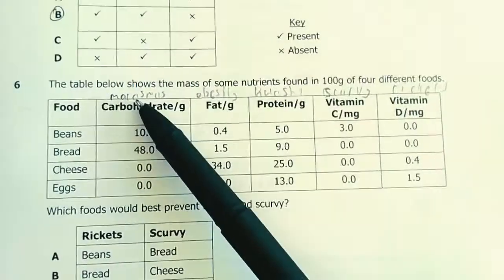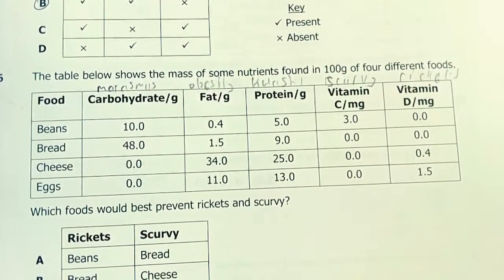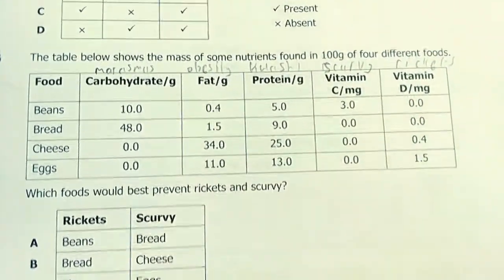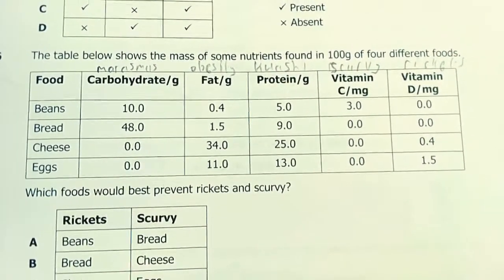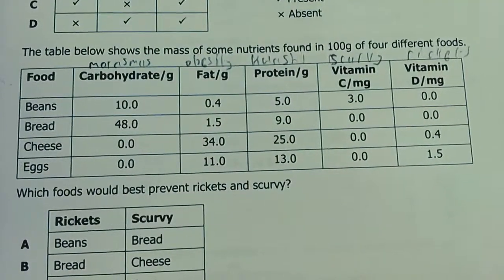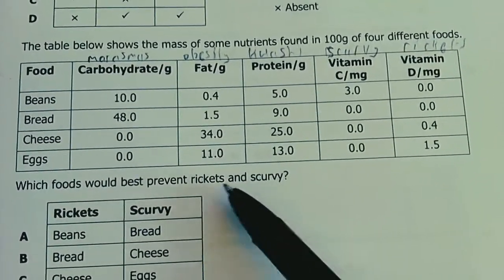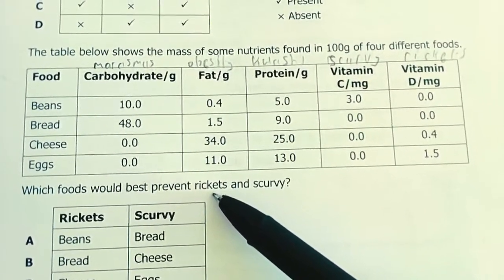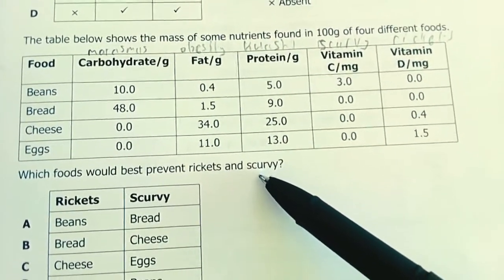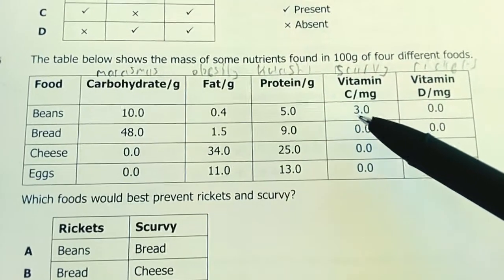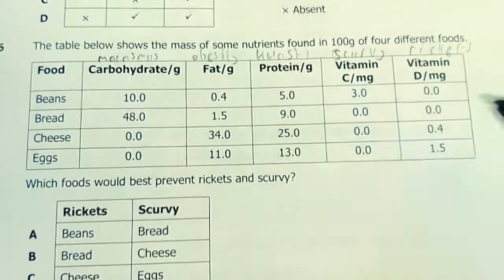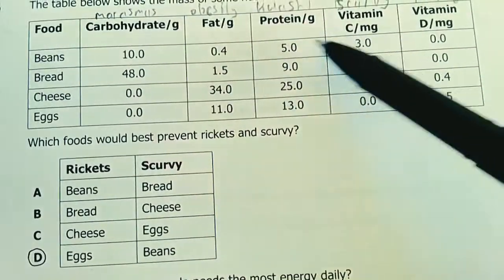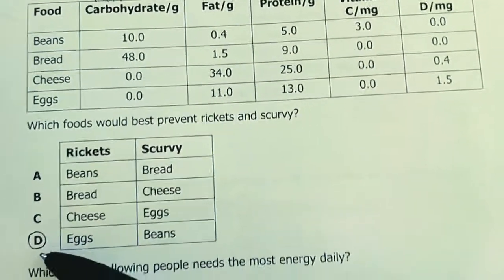Question 6. The table shows the mass of some nutrients found in 100 grams of four different foods: bread, beans, cheese, eggs. Which foods would best prevent rickets and scurvy? Rickets is brought about by poor bone formation from lack of calcium, vitamin D, and the like. Scurvy is lack of vitamin C. So we're looking for vitamin D and C. Vitamin C is highest in beans at 4, then 1.5 is the highest in vitamin D for eggs. So eggs for rickets, beans for scurvy. Our answer for number 6 is D.